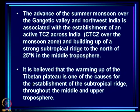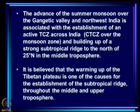The advance of the summer monsoon over the Gangetic valley and north-west India is associated with the establishment of an active continental tropical convergence zone (CTCG) across India over the monsoon zone and the building up of a strong subtropical ridge to the north of 25°N in the middle troposphere. Once you have an active CTCG with intense convection, overlying it will be a high pressure region - the subtropical ridge. It is believed that the warming of the Tibetan plateau is one of the causes for the establishment of the subtropical ridge throughout the middle and upper troposphere.